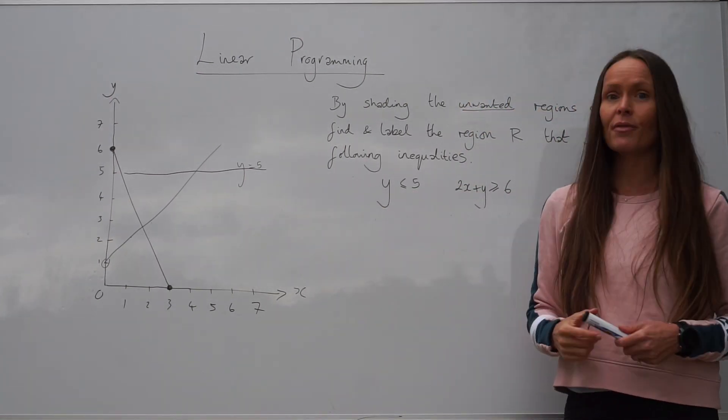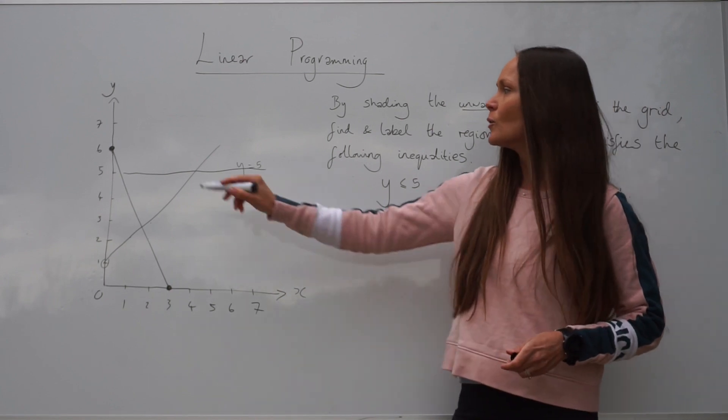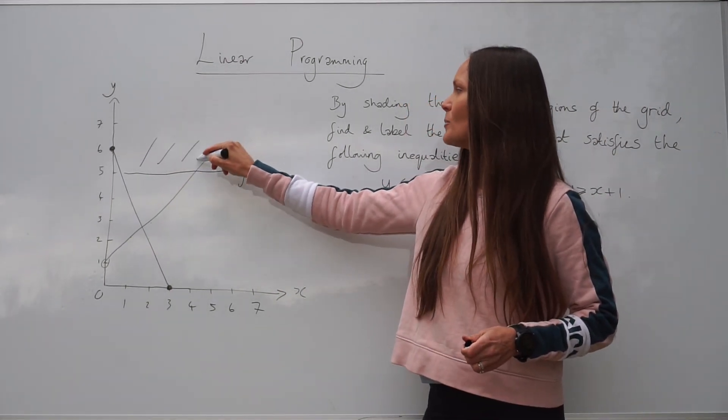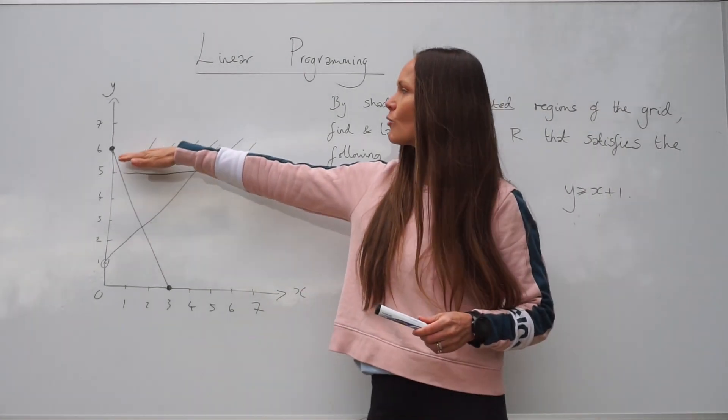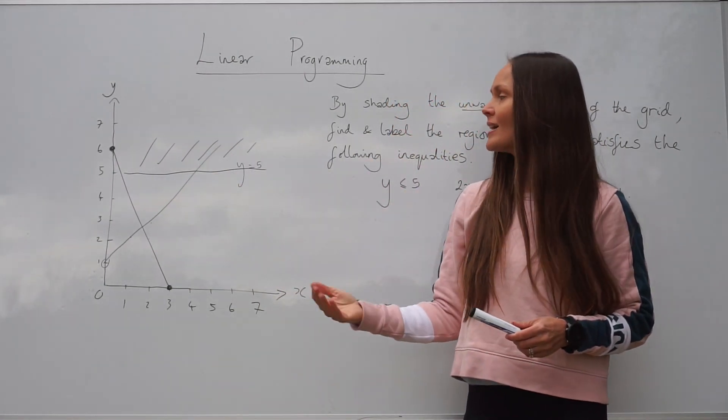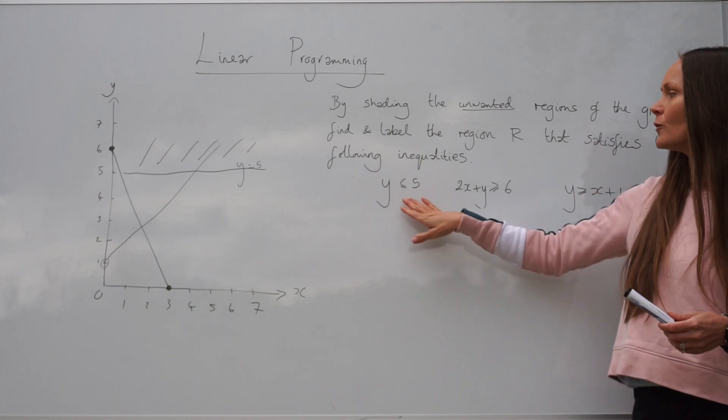So that means everything that's unwanted, the unwanted region, would be above the line, because that is where all the y-coordinates are greater than 5. So that's the unwanted region for the first one.